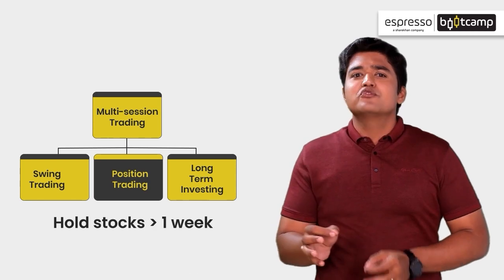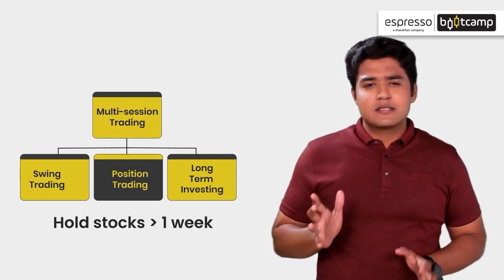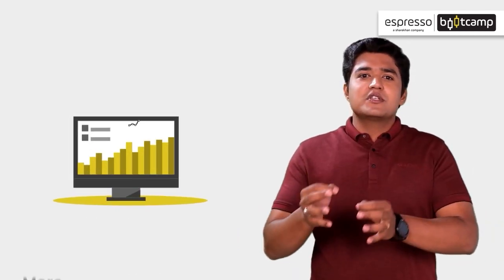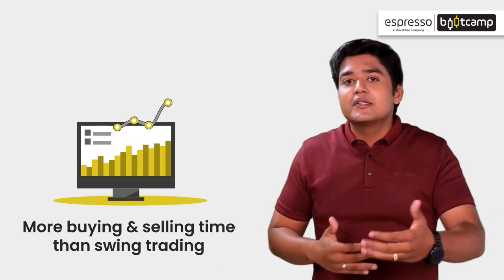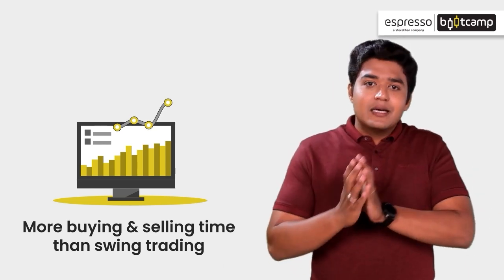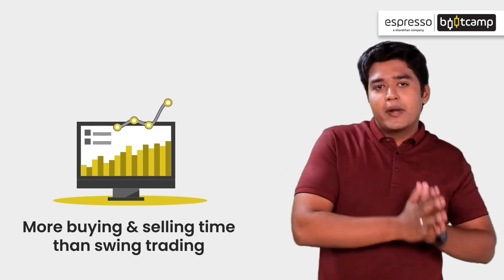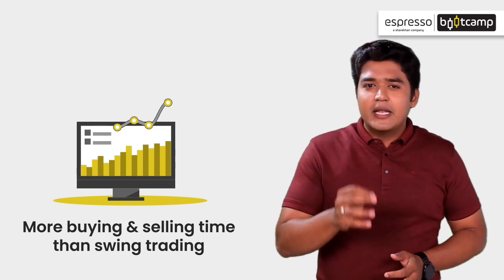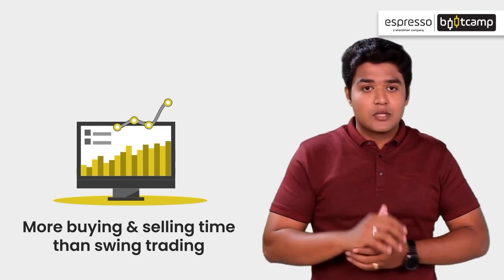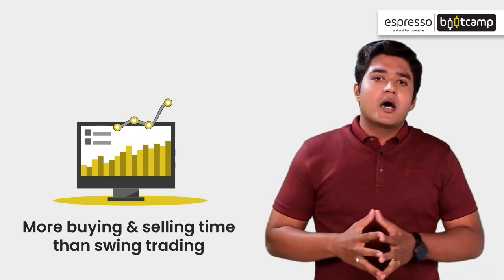Next is Positional Trading. Here you can hold stock for a few weeks or more. In this, a trader takes position when the stock establishes an upward trend and exits when that trend breaks. Here buying or selling time is more than swing trading. This follows market trends.